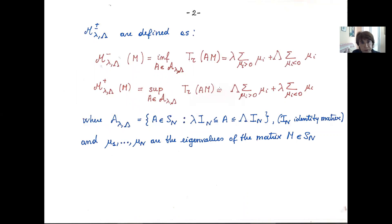What are these Pucci's operators? They can be defined in two different ways. The first uses an inf and sup definition, which takes into account that these operators are called extremal operators. The second definition, which I will emphasize, defines these operators as sums of the eigenvalues — mu_i are the eigenvalues of the symmetric n-by-n matrix M.